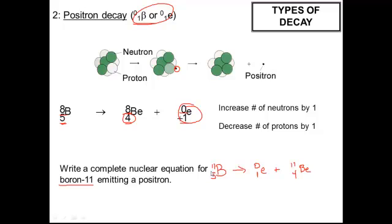But notice we're dealing with different isotopes of boron and beryllium. Up here we had beryllium-8 and boron-8. Down here we have boron-11 and beryllium-11.